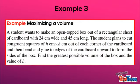Example 3. A student wants to make an open-topped box out of a rectangular sheet of cardboard with 24 cm wide and 45 cm long. The student plans to cut congruent squares of h cm by h cm out of each corner of the cardboard and then bend and glue the edges of the cardboard upward to form the sides of the box. Find the greatest possible volume of the box and the value of h.